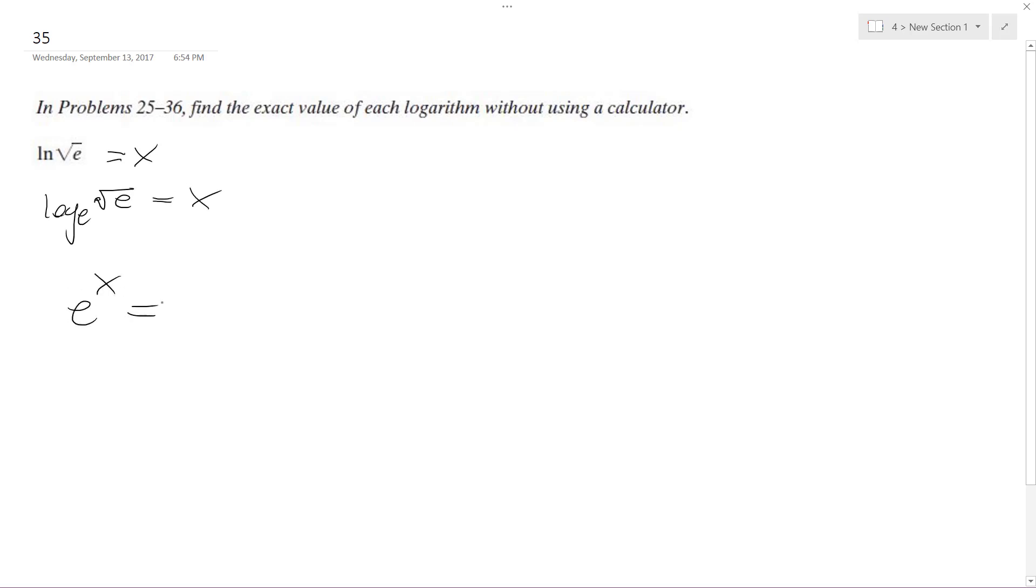This is the same thing as e raised to the x is equal to square root of e, which is the same thing as e raised to the 1 half. So e raised to the x is equal to e raised to the 1 half, because a radical, if it doesn't have a number, it's the same thing as anything raised to the 1 half.